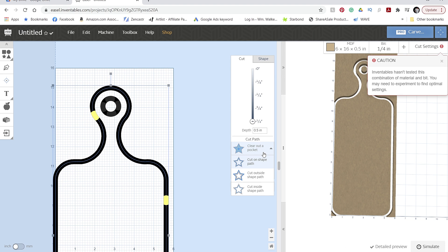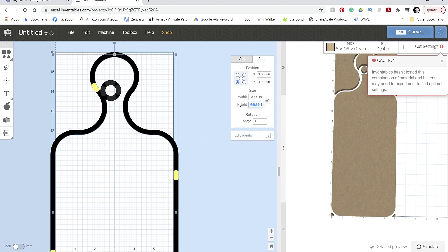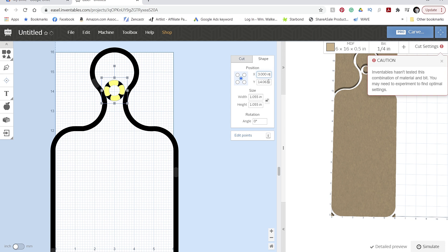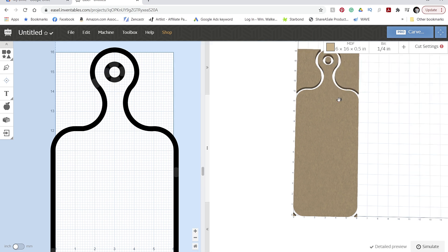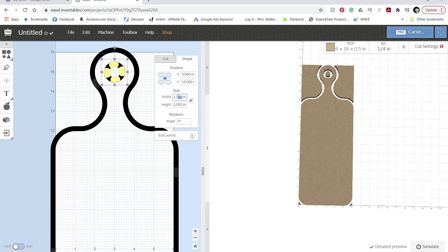Then I jumped into the Inventable Software Easel and imported the SVG. Faber exported the right shape, but it's a little goofy in that the size is a bit off. So I re-entered my parameters in Easel, which was easy enough to do.